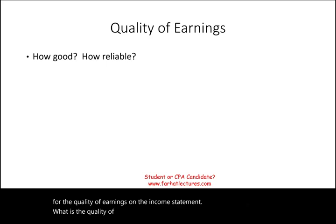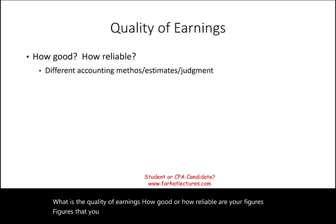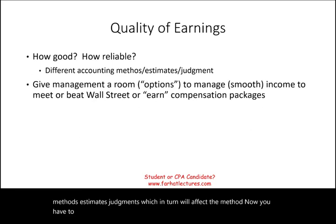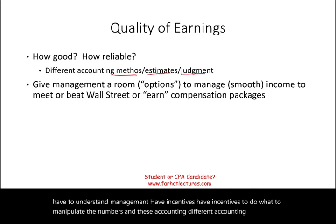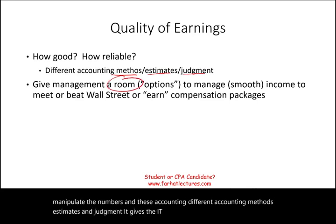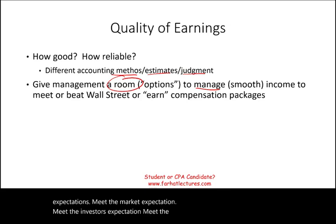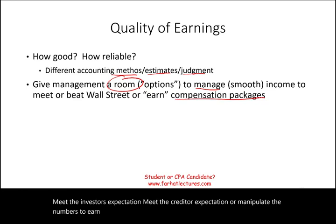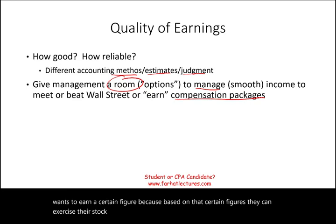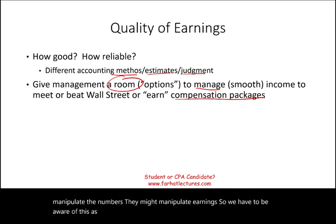What is the quality of earnings? It refers to how good and reliable your reported figures are. Remember, different accounting methods, estimates, and judgments all affect the numbers. Management has incentives to manipulate numbers — these accounting options give management room to smooth income in order to meet Wall Street expectations, investor expectations, creditor expectations, or to manipulate numbers to earn their compensation packages. For example, if management wants to reach a certain figure to exercise stock options and make a personal profit, they might manipulate earnings. We have to be aware of this when evaluating the income statement.